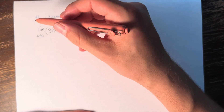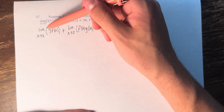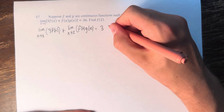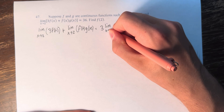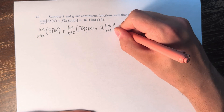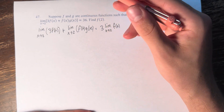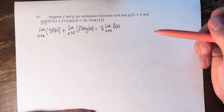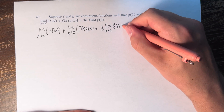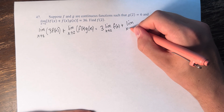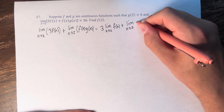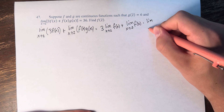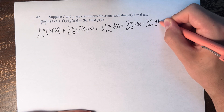We can say that this is equal to — if we have the limit of 3 f of x, that's equal to 3 times the limit of f of x. And if we have the limit as x approaches 2 of f of x times g of x, that could be equal to the limit of f of x times the limit of g of x.